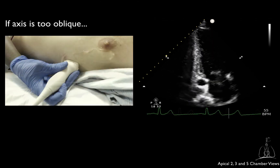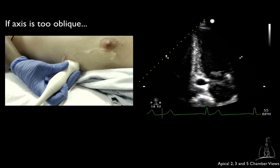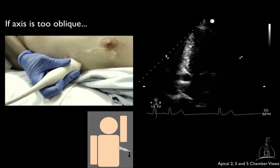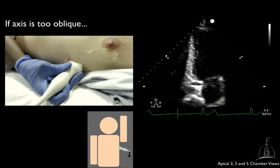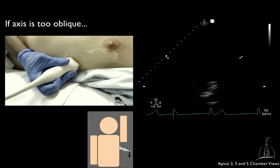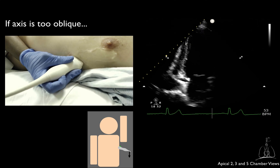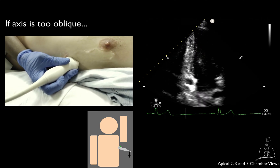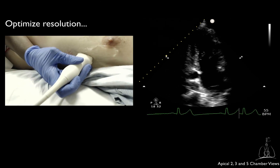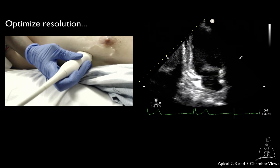If the axis of your 2 chamber is too oblique from one side, usually with the left atrium towards the right lower corner of the screen, try to rock the probe with the marker looking upwards. If the resolution is not optimal, remember to slide millimeter by millimeter on the skin until you obtain a good definition. Sliding within the same intercostal space may also help.